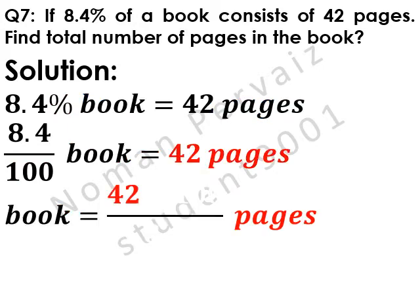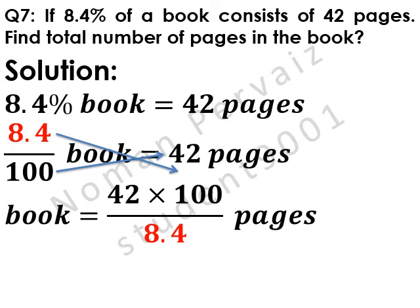Book equals 42 pages is written. Here, we are going to apply cross multiplication. 100 is multiplied with 42, 8.4 goes to division.